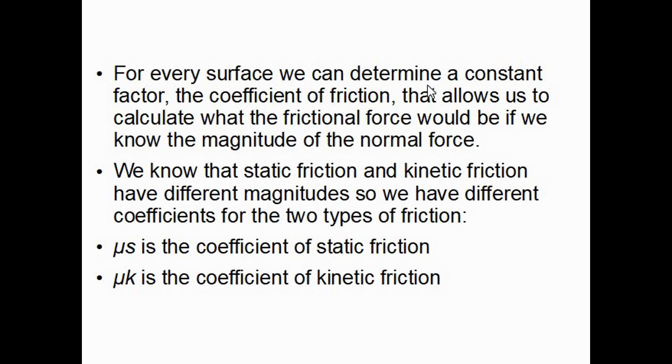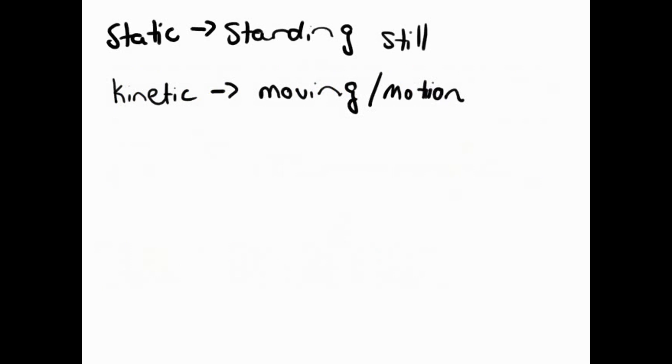So, we know that static friction and kinetic friction have different magnitudes, so we have different coefficients for the two types of friction. So we denote for the coefficient of static friction, as the slide suggests, mu s. This is mu, not u, it's mu s is static friction.